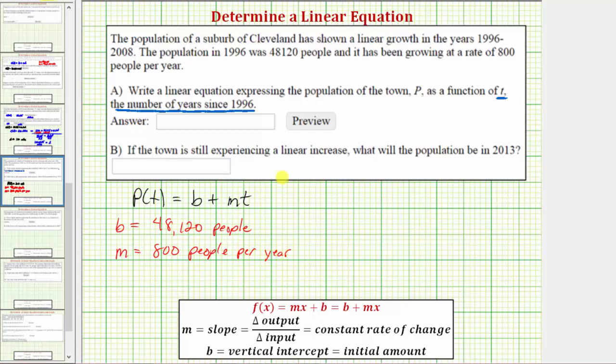So now we know for this situation, P(t) is equal to 48,120 plus 800t. So we enter our function here. So we enter P(t) equals, again, 48,120 plus 800t.